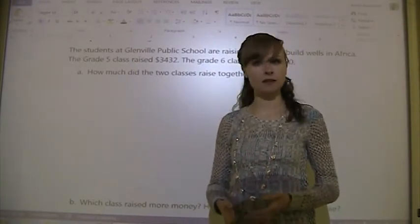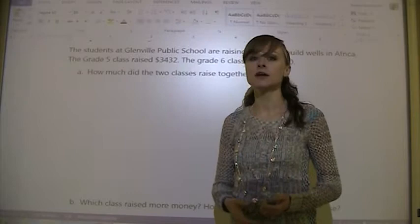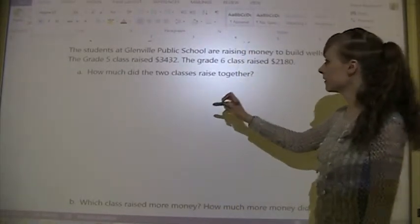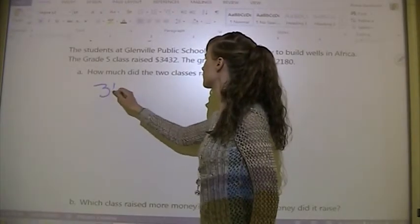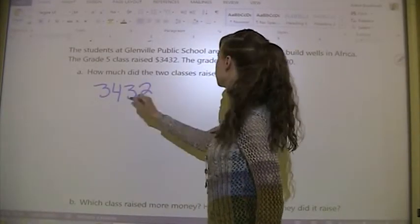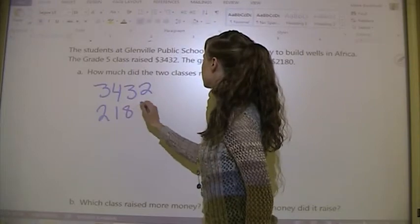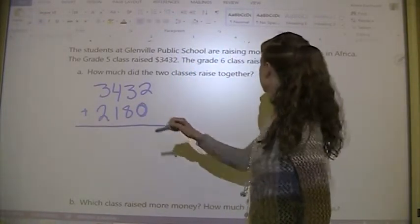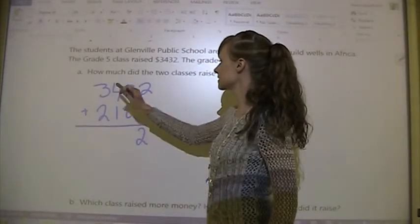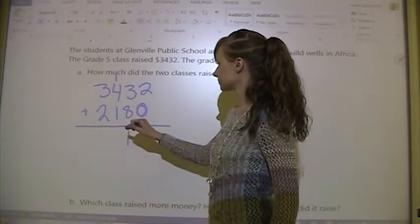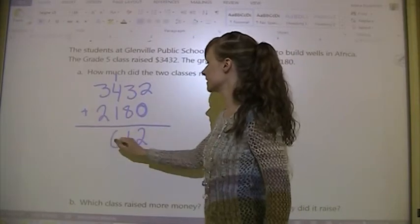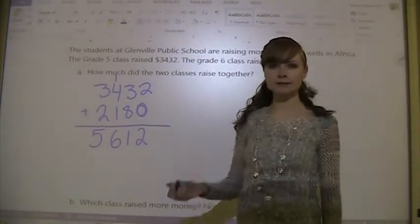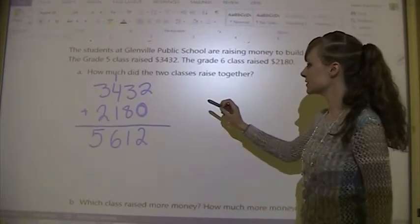How much did the classes raise together? We just have to add the two numbers. Two plus zero is 2. Eight plus three is 11. Four, five, six, and five.